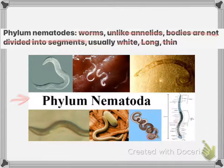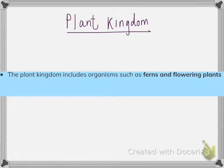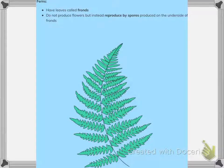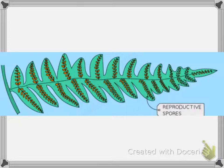The plant kingdom includes organisms like ferns and flowering plants. Ferns have leaves called fronds, do not produce flowers, and instead reproduce by spores produced on the underside of the fronds.